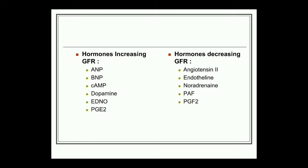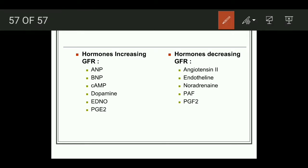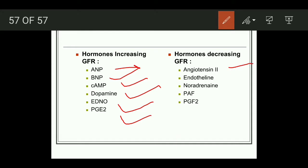Certain hormones also affect GFR. Hormones that increase GFR include ANP (atrial natriuretic peptide), brain natriuretic peptide, cyclic AMP, dopamine, endothelium-derived nitric oxide, and prostaglandin E2. Hormones that decrease GFR include angiotensin II, endothelin, noradrenaline, platelet activating factor, and prostaglandin F2.